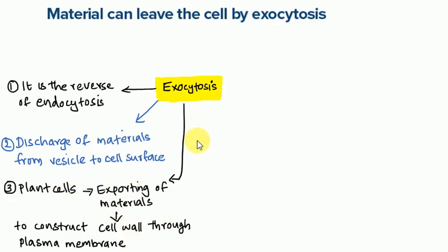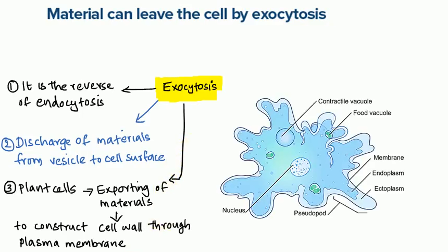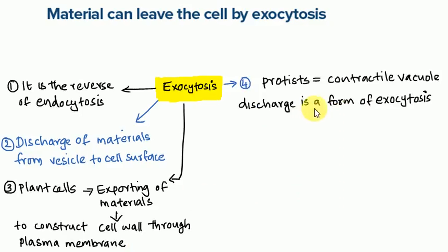In protists — for example, in amoeba — contractile vacuole discharge happens in the form of exocytosis. In this picture, you can see the contractile vacuole. So in protists, contractile vacuole discharge is a form of exocytosis.